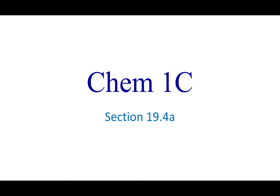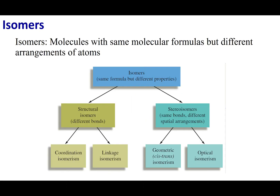Welcome to section 19.4a. In this section we're going to talk about isomers. Isomers are molecules that are made out of the same number of atoms of the same type. However, they are put together differently, and based on how they're put together you will generate different molecules. These will react differently and behave differently. There are certain types of isomers that we can have.